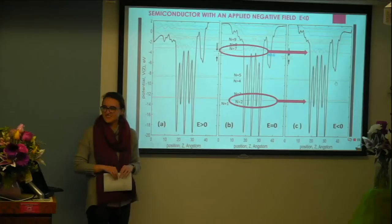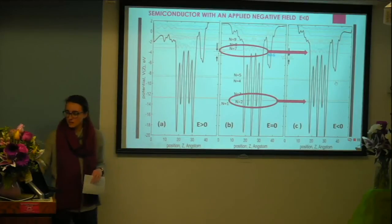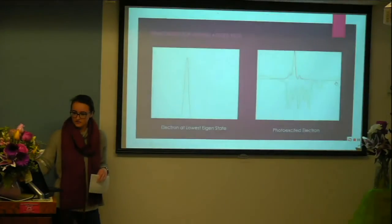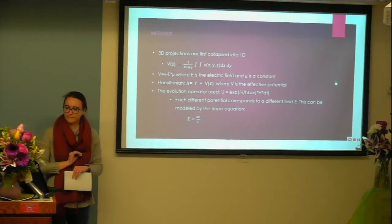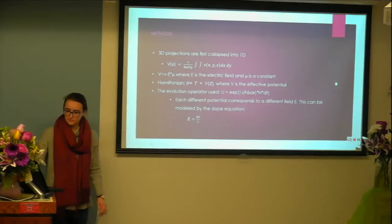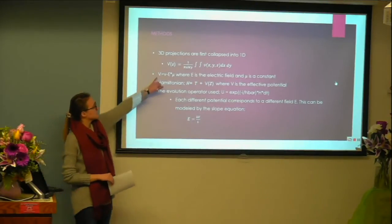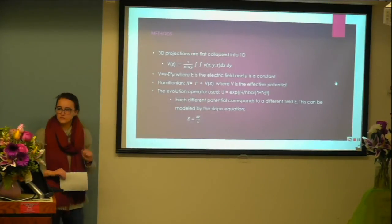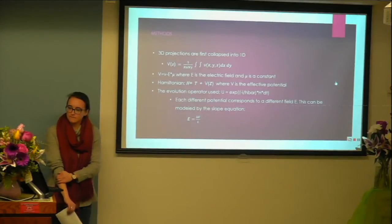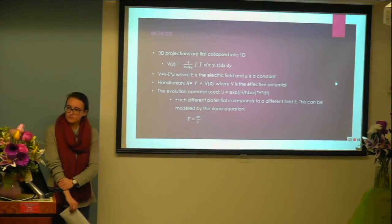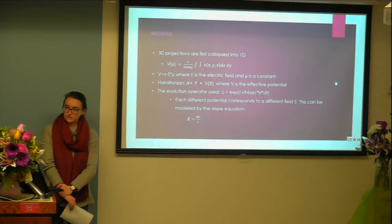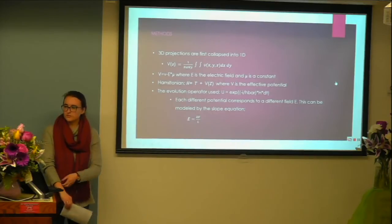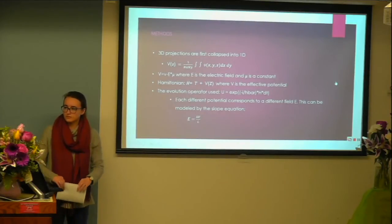Can you go to your equation slide? Your potential under an electric field is getting a constant slope — mu is your position operator. Depending on the sign of the field, you will get a positive or negative additional component.